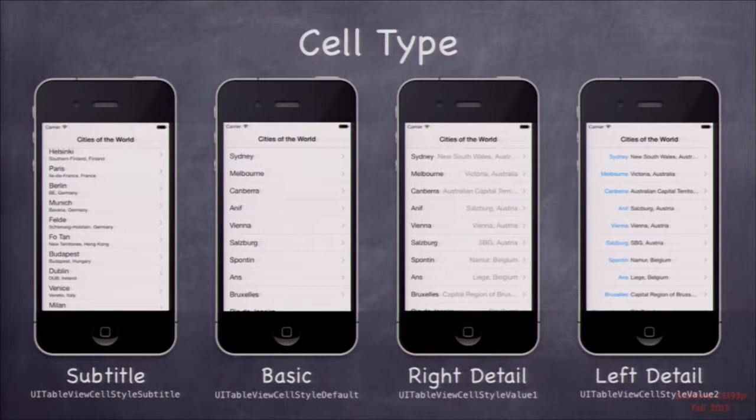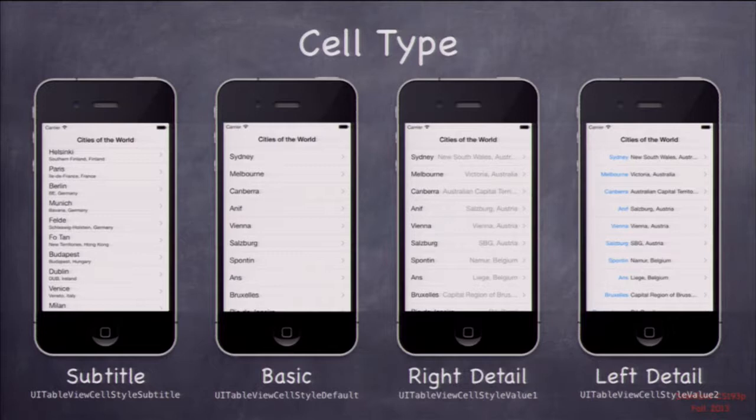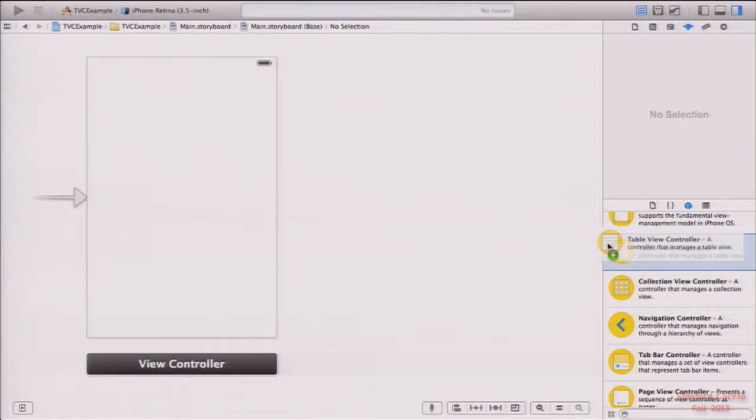Each cell can have different types. The subtitle type has a title and a subtitle — city plus country. Basic has no subtitle. Right detail and left detail put the subtitle information to the side with some color. These are the four built-in cell types, and you can also create custom cells where you lay out the contents completely on your own.